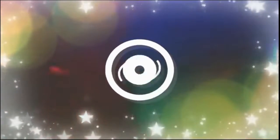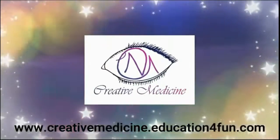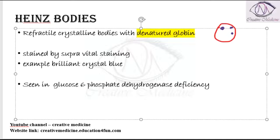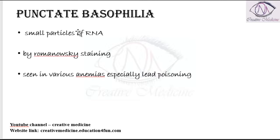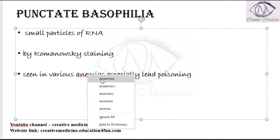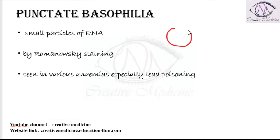Welcome to Creative Medicine. In this lecture we will learn about punctate basophilia. Punctate basophilia involves small particles of RNA seen in RBCs, which are stained by Romanowski staining. These are seen in various anemias, like lead poisoning.